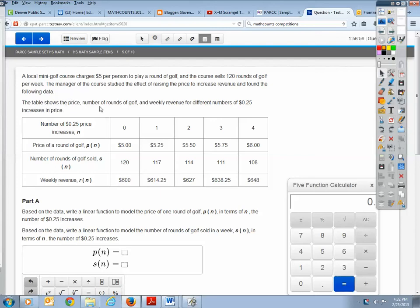The table shows the price, number of rounds of golf, and weekly revenue for different numbers of $0.25 increases in price. So that means one is $0.25, two is $0.50, three is $0.75, and so on. The price of a round of golf P(n) is going up by $0.25 each time. The number of rounds of golf is decreasing, and that makes sense because as it becomes more expensive, less people are going to play. But the weekly revenue is increasing because even though they're getting less people, people are paying more.